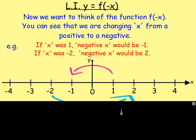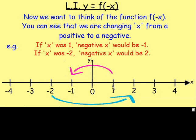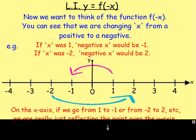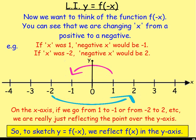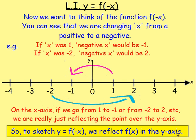If you think about that on a graph — if you were going from one to negative one, or from negative two to positive two, or from three to negative three — what we're doing is we're just reflecting that point over the y-axis. So if we go from negative four to four, we're reflecting it across this axis here. So if you want to graph y equals f of negative x, all you do is reflect y equals f of x in the y-axis.